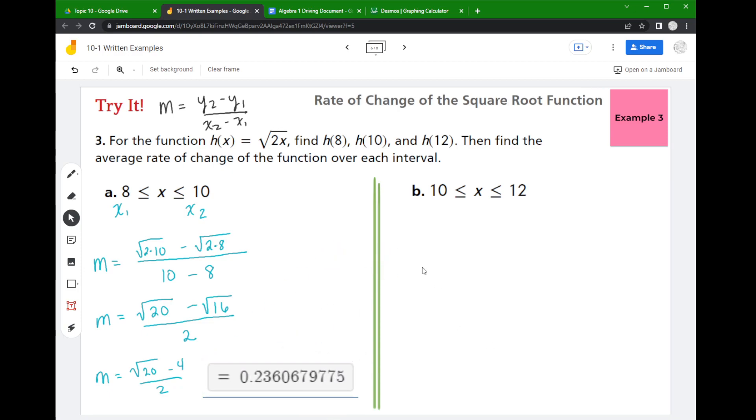All right, so now we're going to do that same thing now, but for the 10 and the 12. So the 10 is my new x1, the 12 is my new x2. So I'm going to put 12 minus 10 down here in the bottom of my square root function.